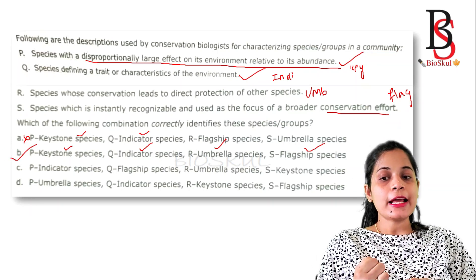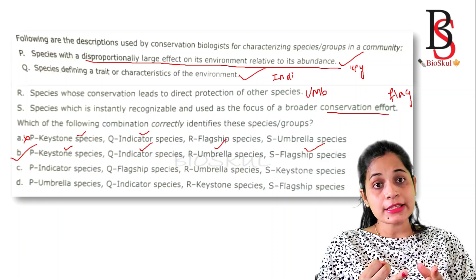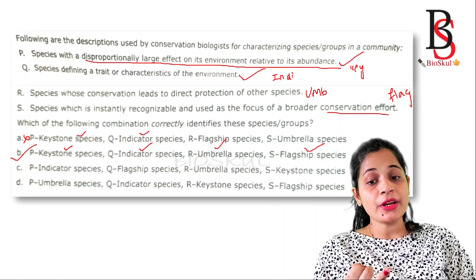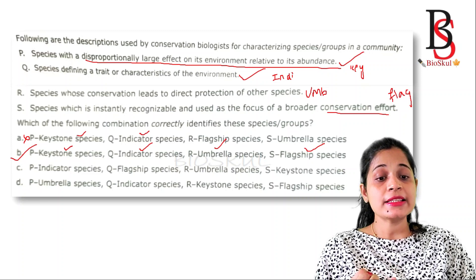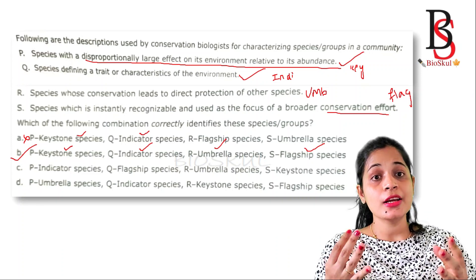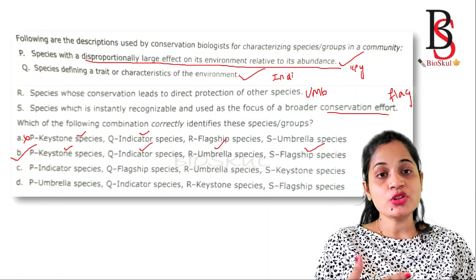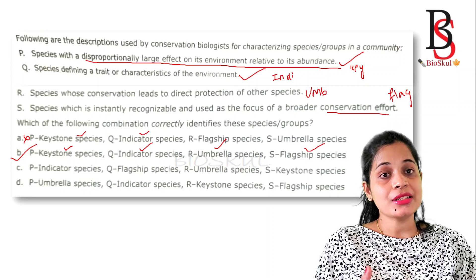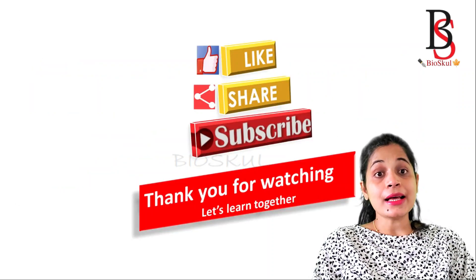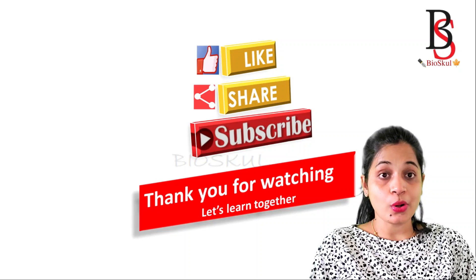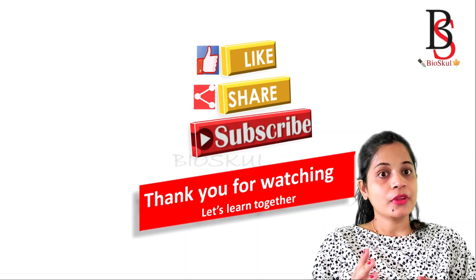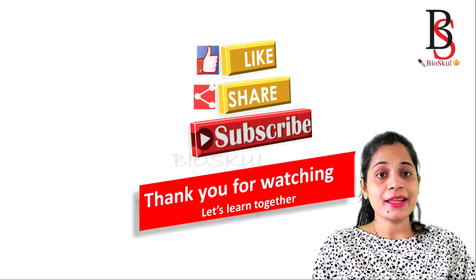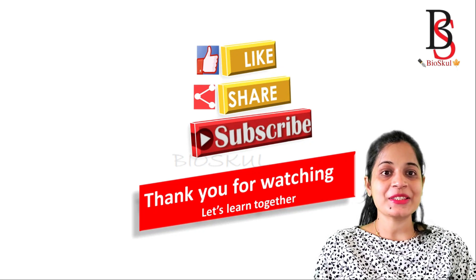Mostly in examinations, questions are asked from the definitions of keystone species, umbrella species, indicator species, flagship species, and dominant species. I'm sure you will now be able to solve any question related to this topic. If you liked this video, please subscribe to my channel — bye bye, see you in the next video.